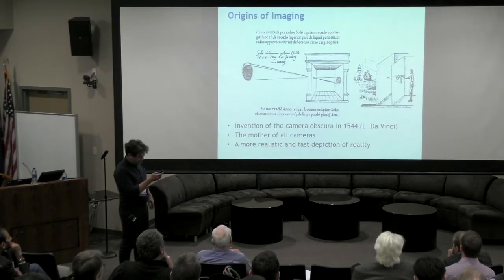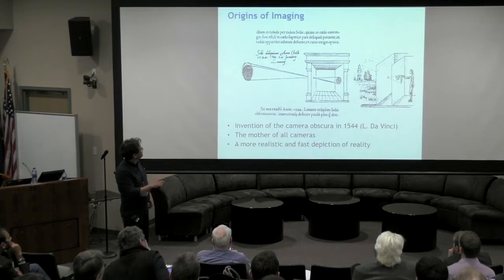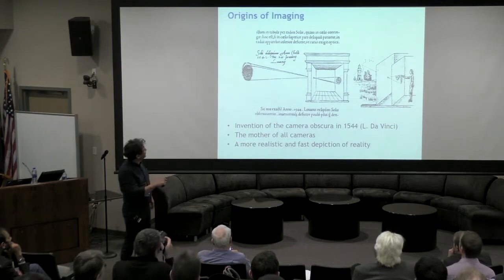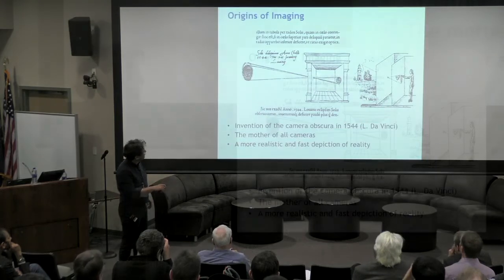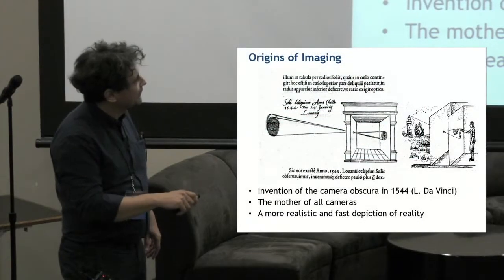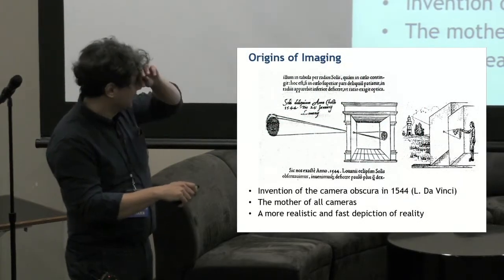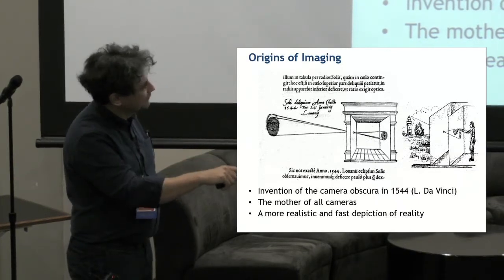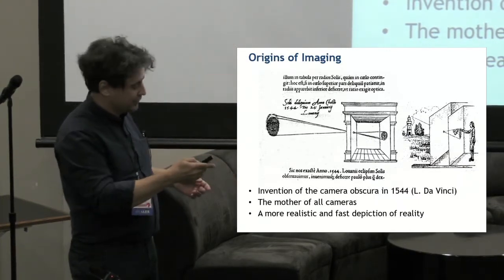And it turns out that we are doing cameras today from this invention of the dark room, the camera obscura, from 1544. This is Leonardo da Vinci's writing. This is a gravure, and basically it's a dark room with a hole. Everybody did this when he was in elementary school. And you get the projection of the sun on this wall. So this is the mother of all cameras.